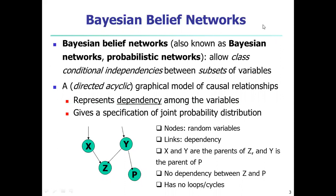The Bayesian Belief Network is also known as the Bayesian Network or the Probabilistic Network. It allows class conditional independencies between subsets of variables. This simplifies computation. When the assumption holds true, the Naive Bayes classifier is the most accurate in comparison with all the classifiers. In practice, however, dependencies can exist between variables. By using Bayesian Belief Networks, joint conditional probabilities can be distributed and distinguished between values. They allow conditional independencies between subsets and variables, where subsets and variables will be the dependent values.